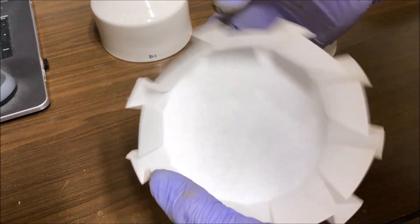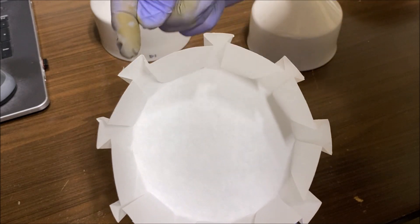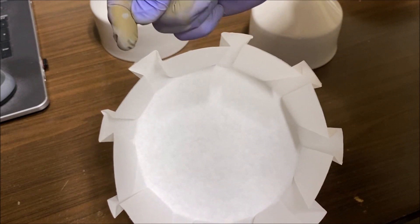Now I have a filter folded a certain way. See this shape right here? It's got to be this shape.